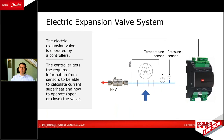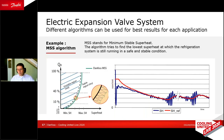The superheat controller needs a couple of sensors to determine the operating condition and perform proper calculations. The picture on screen is a Danfoss EKE-1 superheat controller. The expansion valve is located ahead of the evaporator, and after the evaporator, pressure sensors give signals to the superheat controller, which then opens and closes the valve. The EKE-1 and other Danfoss EKE-1 superheat controllers have an intelligent algorithm able to find the lowest possible superheat all the time — going as close as possible to the MSS curve.